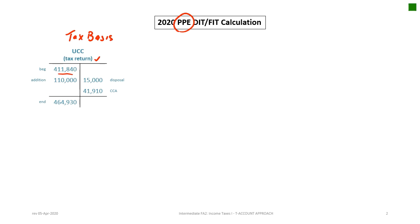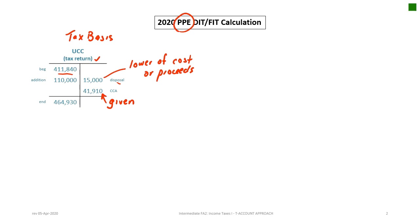We start with the beginning balance of $411,840. There's an addition during 2020 of $110,000. We're also told that during the year there's a disposal. For tax purposes, the amount taken out of the disposal is the lower of original cost or proceeds. It's very rare that an asset will go up in value, so the proceeds obtained for the asset sold was $15,000. Then we deduct CCA — in this case it's given — of $41,910, giving us an ending UCC balance at the end of 2020 of $464,930.